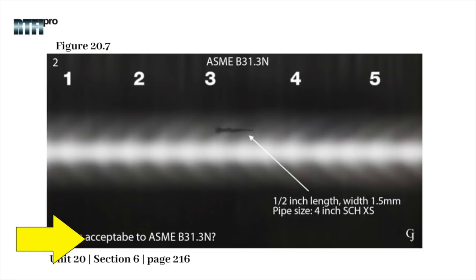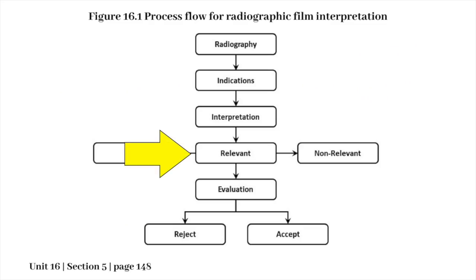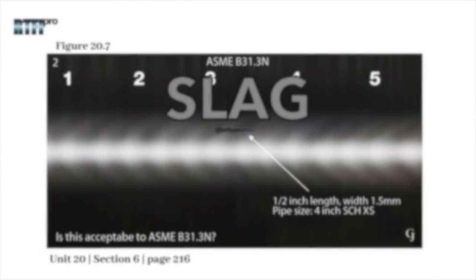The code is ASME B31.3 normal. Through evaluating, we know the indication is relevant. The indication is evaluated as slag.